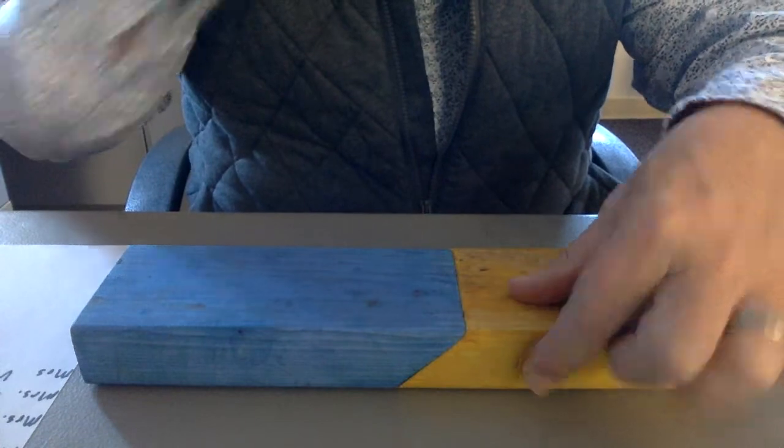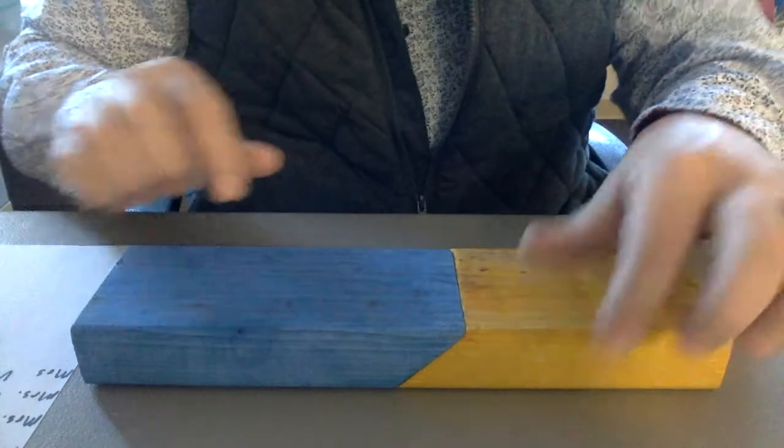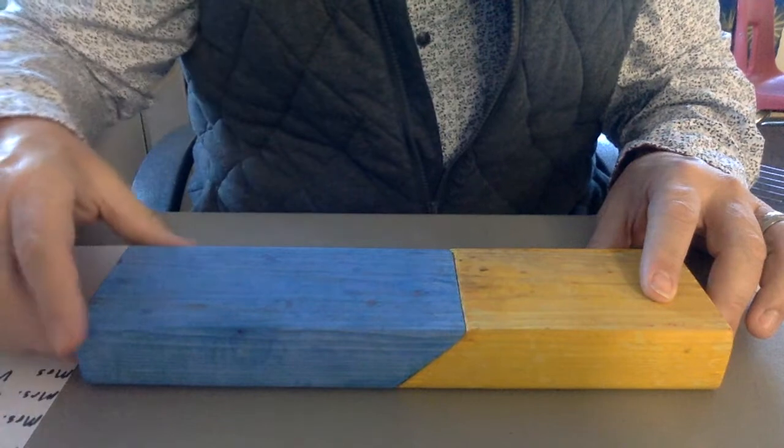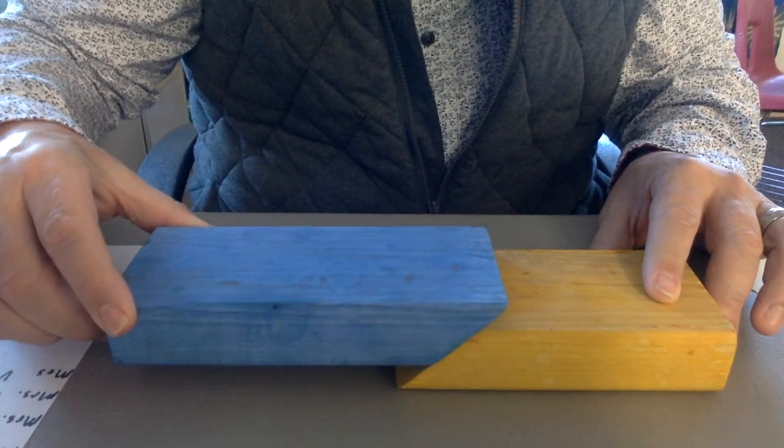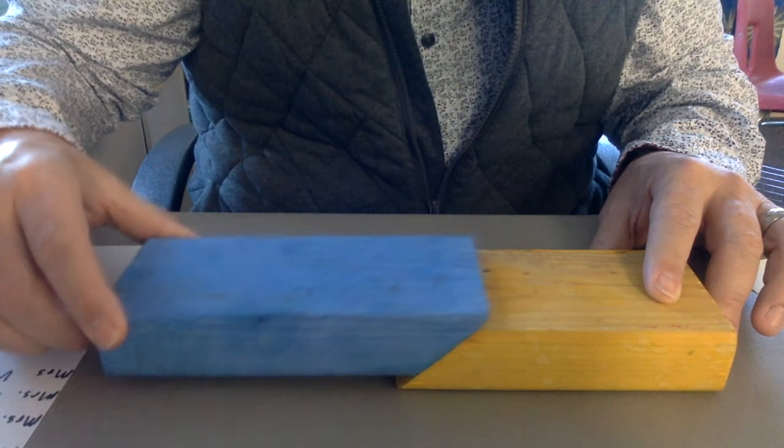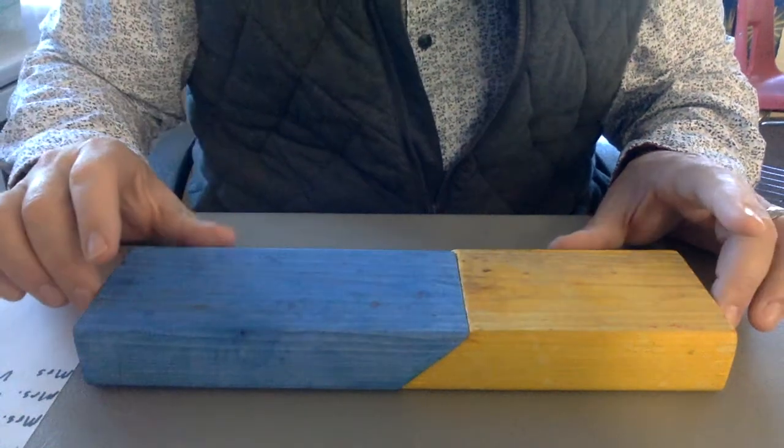Hanging wall, foot wall. And what happens in a reverse fault is the hanging wall slides up, and that's the movement along the fault line.